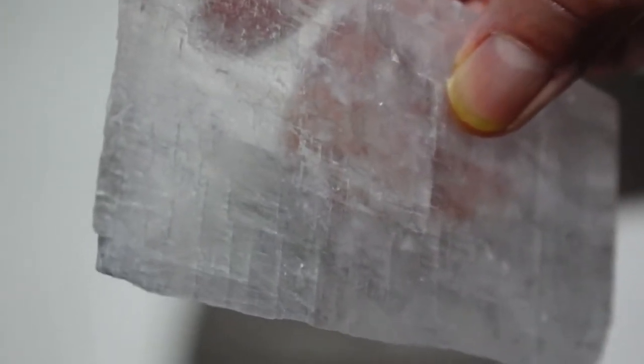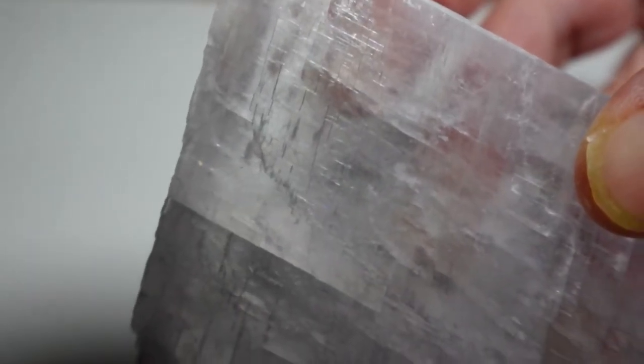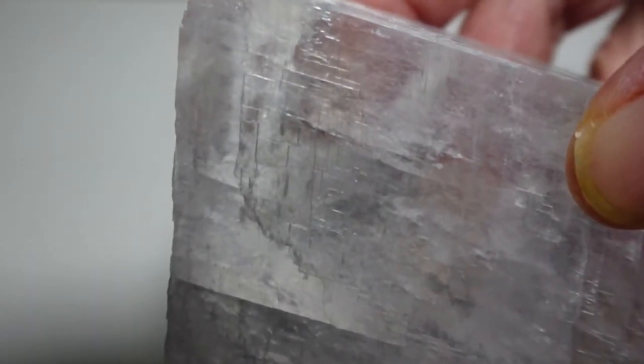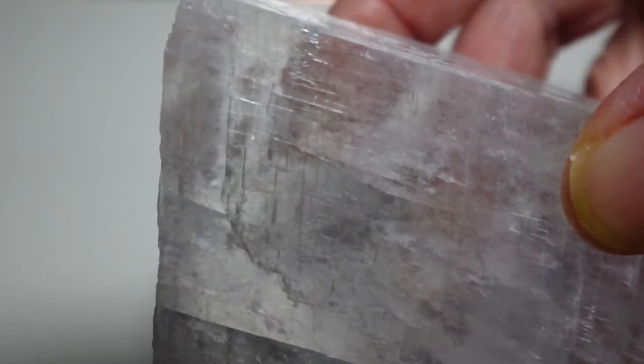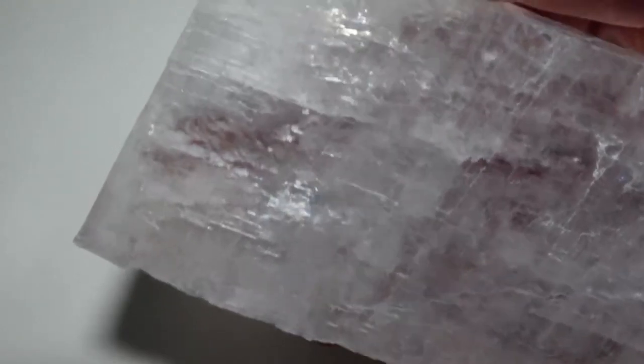And if I try to put it on this side right here, yep, it does have different angles as well, too. I'm trying to focus this so that way you'll be able to actually see the patterns of optical calcite or Iceland Spar.